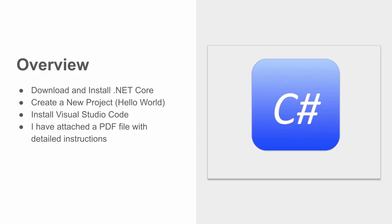The steps we're going to cover are: download and install .NET Core, create a new Hello World project — which is the traditional first program in any language — and make a slight change to it and compile it. Then I'll show you how to install Visual Studio Code, a really nice lightweight editor from Microsoft that you can use throughout the course. I've also attached a PDF file with detailed step-by-step instructions.